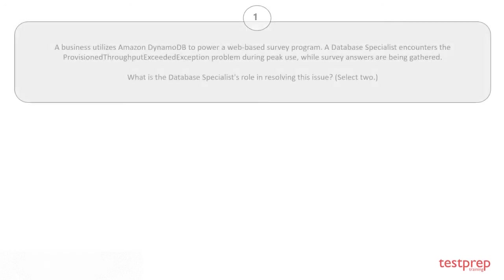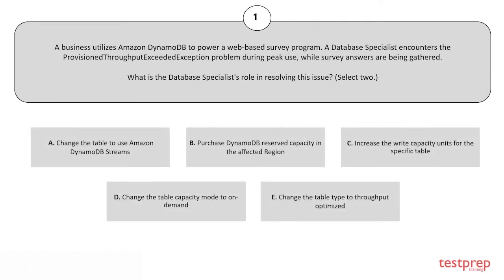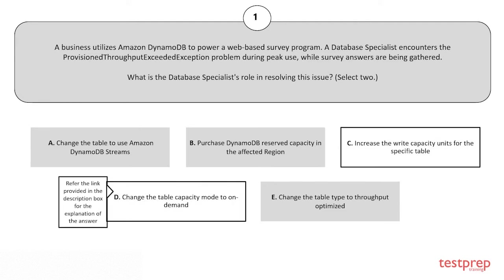Question 1: A business utilizes Amazon DynamoDB to power a web-based survey program. A database specialist encounters the ProvisionedThroughputExceeded exception problem during peak queries while survey answers are being gathered. What is the database specialist's role in resolving this issue? Select two. Options: A) Change the table to use Amazon DynamoDB Streams. B) Purchase DynamoDB reserved capacity in the affected region. C) Increase the write capacity units for the specific table. D) Change the table capacity mode to on-demand. E) Change the table type to throughput optimized. The correct answers are C and D.